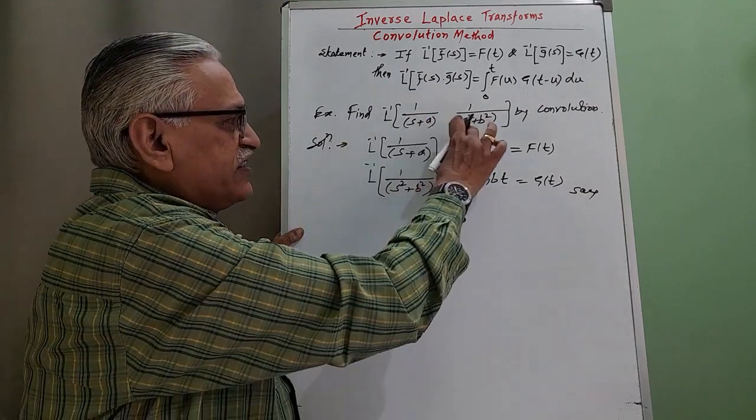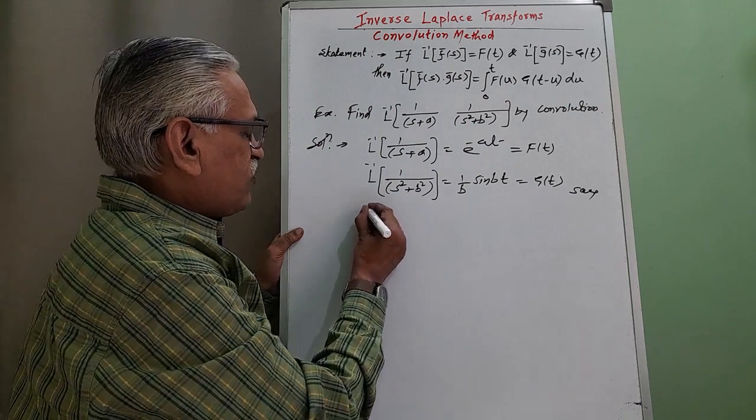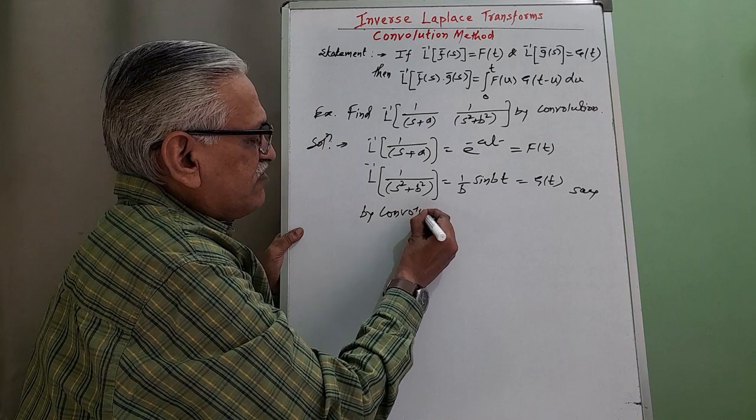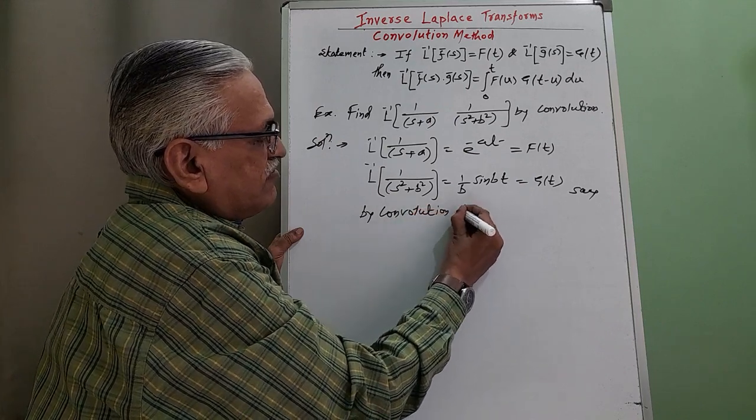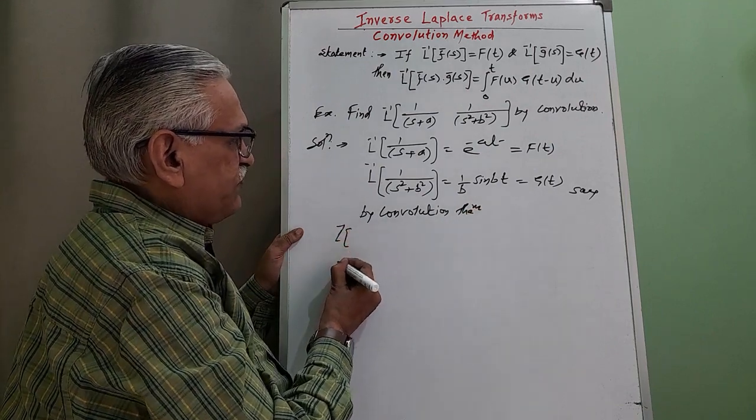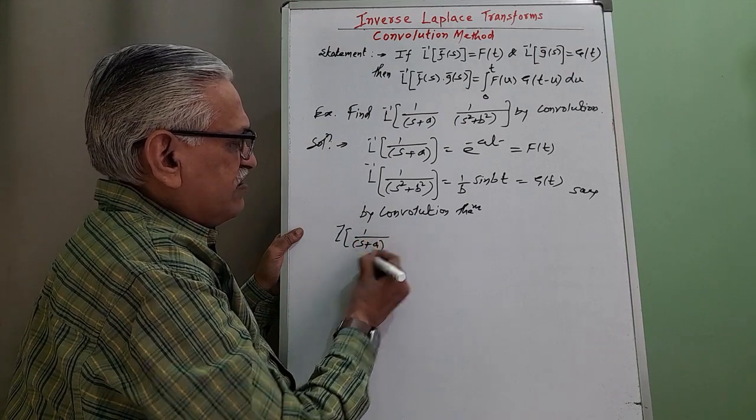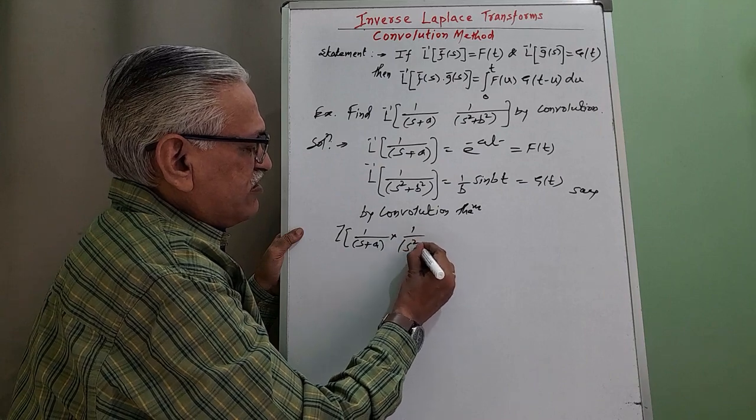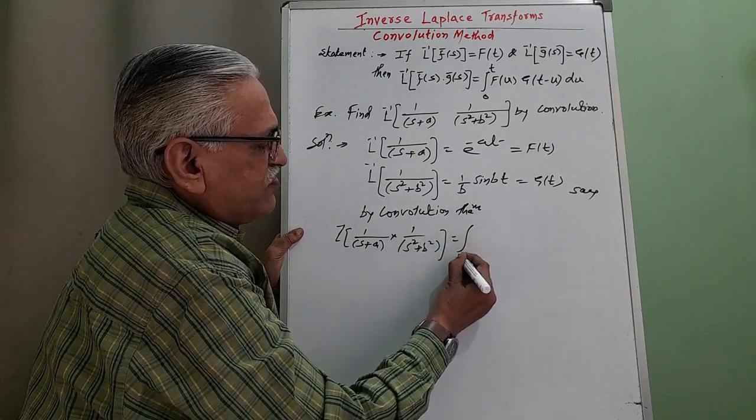And then as here it is product of two terms of s by convolution theorem, inverse Laplace of 1 upon s plus a into 1 upon s square plus b square.